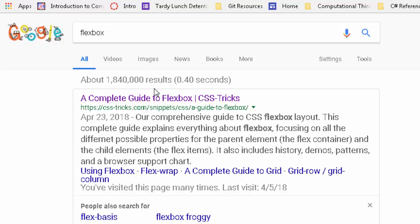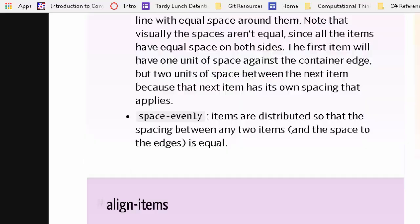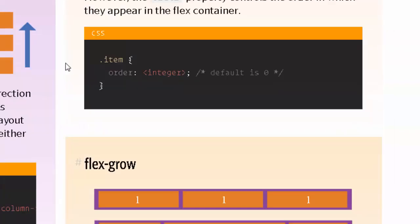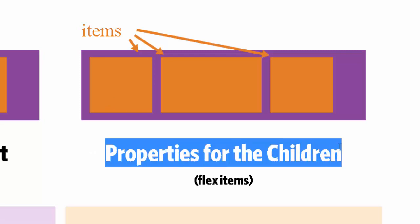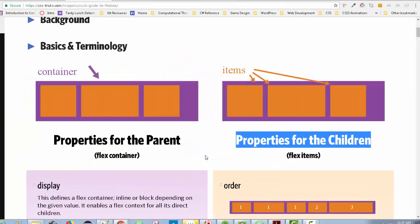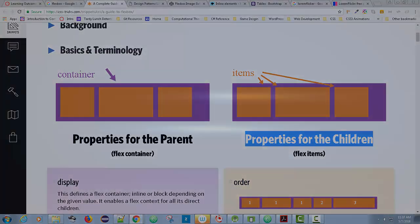I've pretty much run out of time. On my next video I'll briefly cover the properties available for the children items, then focus mostly on styles like rounded corners, drop shadows, and other things you may want to play with. Stay tuned for that video.